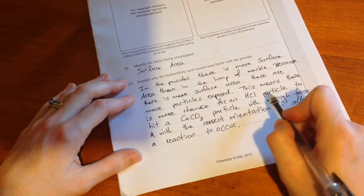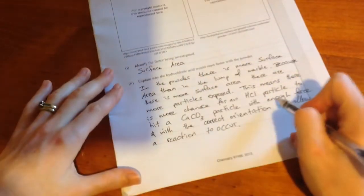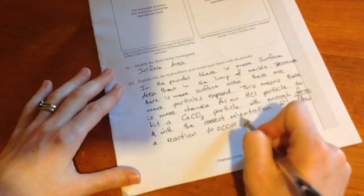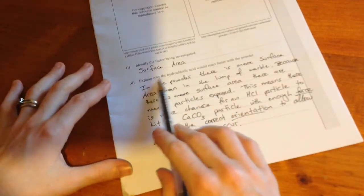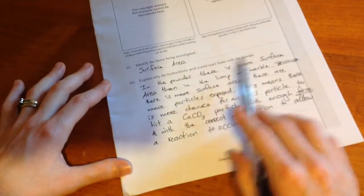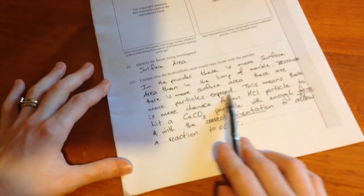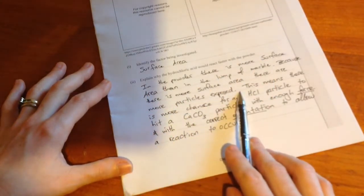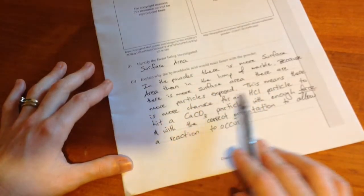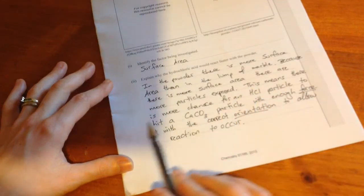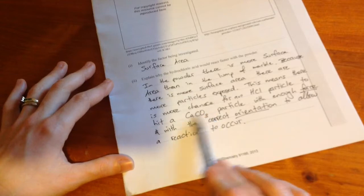Now here, saying two particles hitting each other with enough force and the correct orientation, that's collision theory, okay? So explain why hydrochloric acid would react faster with the powder. We've linked it to surface area, that particles, more particles are exposed in this form, and that means that the chances of an HCl particle to react or hit a calcium carbonate particle is higher.